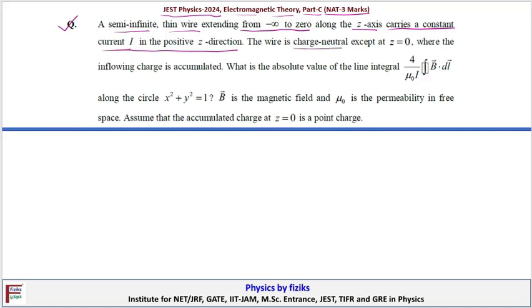The wire is charge neutral except at z equals zero where the inflowing charge is accumulated. We have to find what is the absolute value of the line integral.